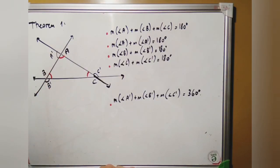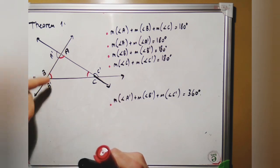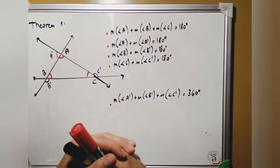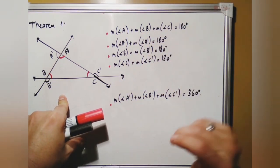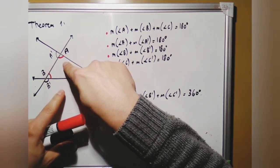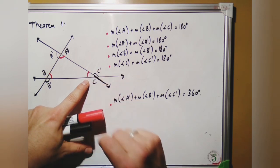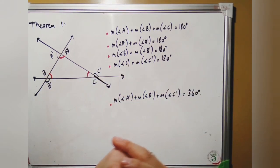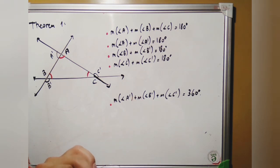We are going to discuss about interior angles and exterior angles of the triangle. Angles A, B, and C are interior angles; A1, B1, and C1 are exterior angles. When we take the sum of interior angles A, B, and C, we get 180 degrees. Each interior angle and its supplementary exterior angle sum to 180 degrees. And we can say the sum of all exterior angles of a triangle is 360 degrees.